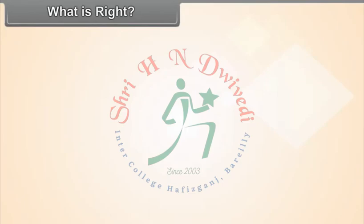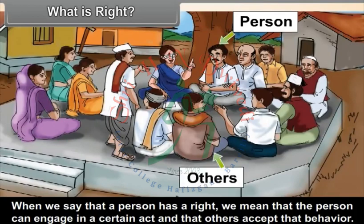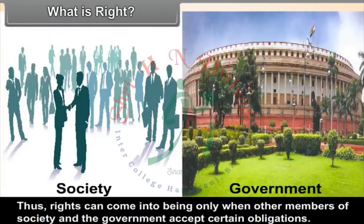What is a right? When we say that a person has a right, we mean that the person can engage in a certain act and that others accept that behavior. Having a right also means that the person can expect specific behavior from other persons and from the government. Thus, rights can come into being only when other members of society and the government accept certain obligations.